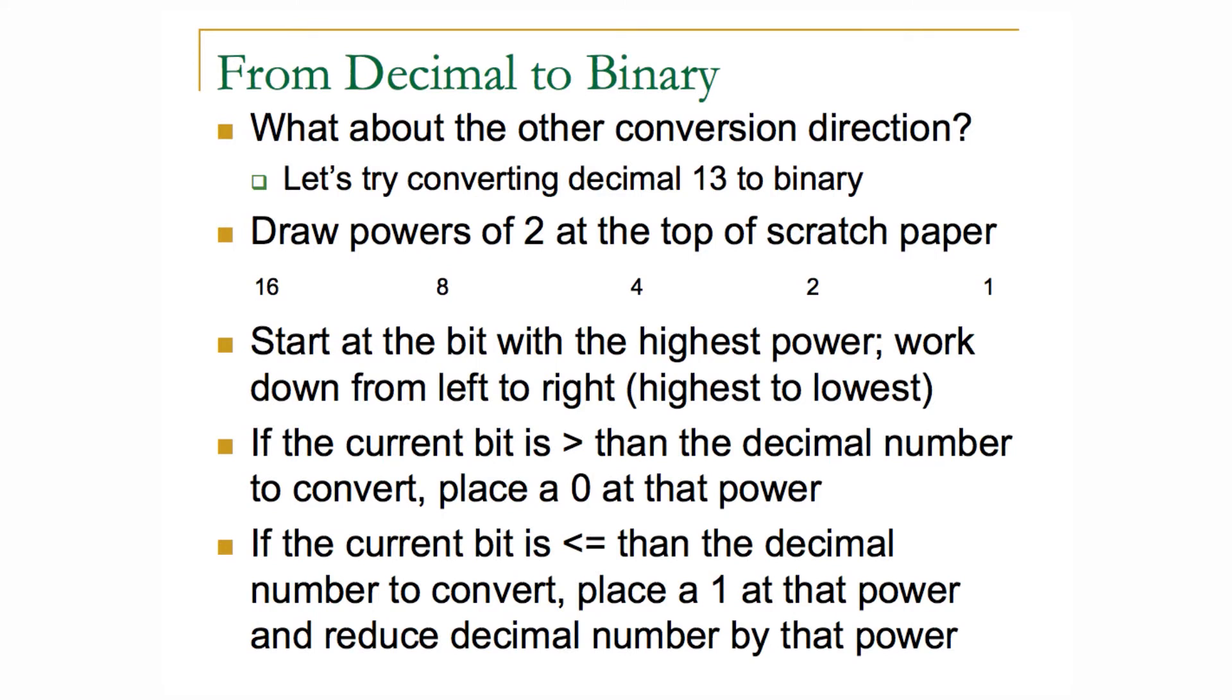If the highest powered bit, the current bit we're looking at, is greater than the decimal number, we just place a zero underneath that power and then move to the right to the next power.